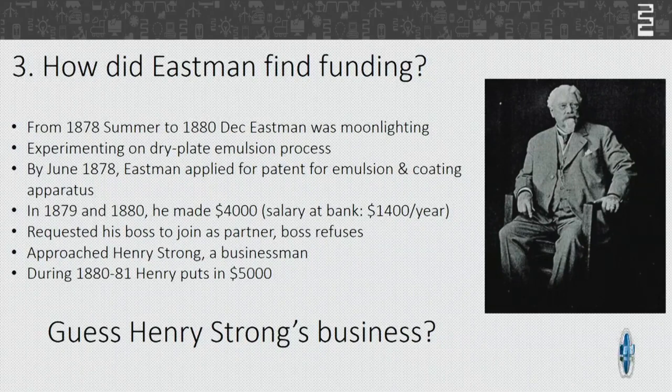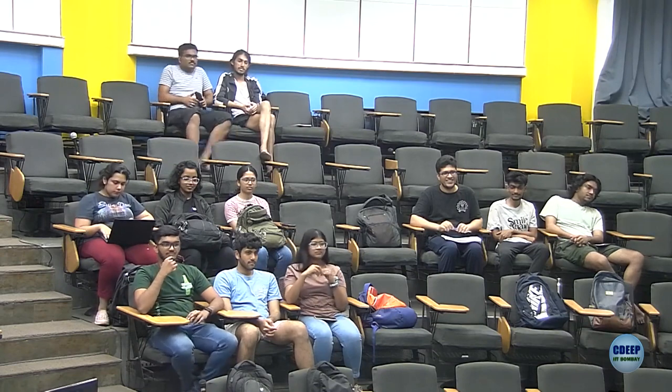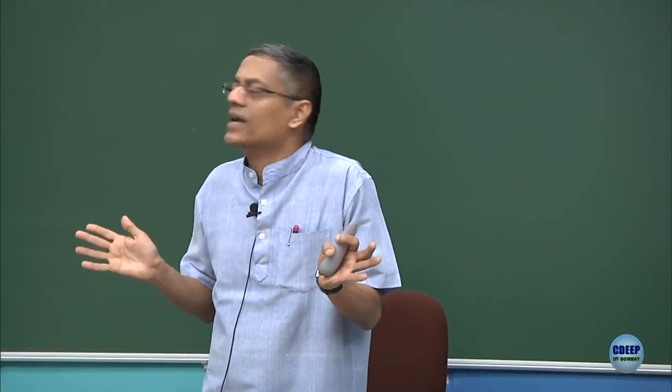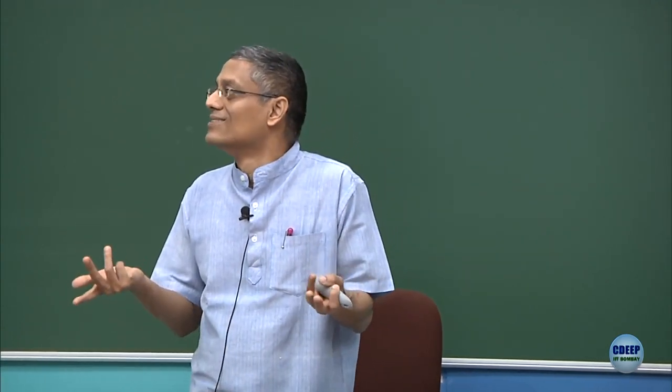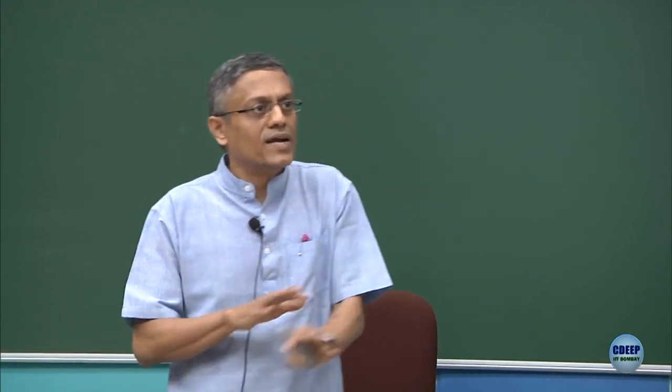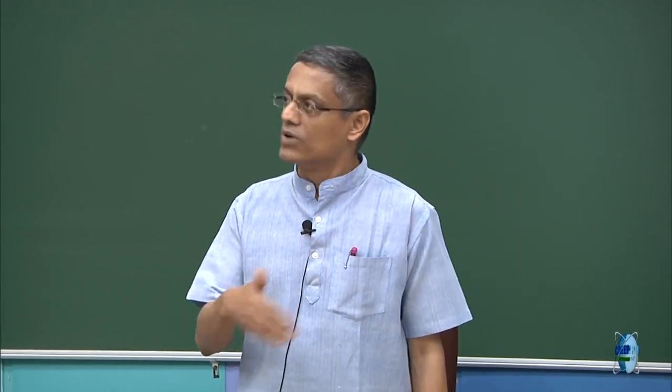His business was horse whips — he was a market leader in horse whips. He had tons of money and didn't know what to do with it. He saw this young guy who had no clue about dry plate technology, but this guy was making money working day and night. And so he put some money in — that is generally how investments happen.